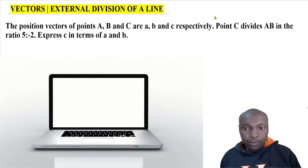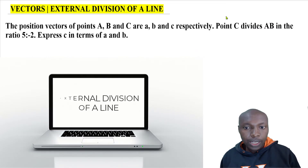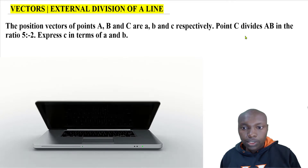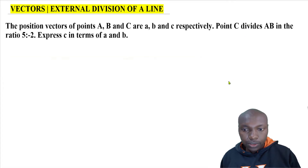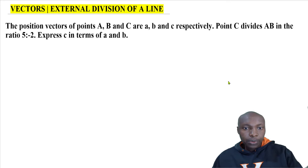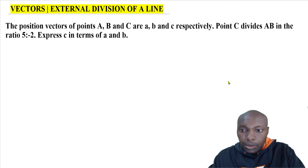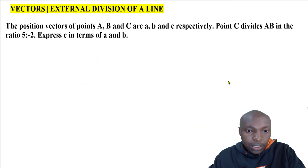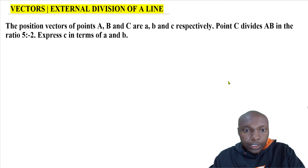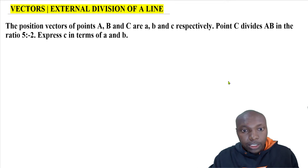Welcome back. Vectors - external division of a line. Let's work out this question on external division of a line. The position vectors of points A, B, and C are a, b, and c respectively. Point C divides AB in the ratio 5 to negative 2. Let's express c in terms of a and b.